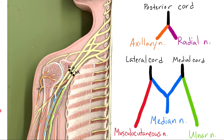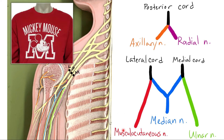As a mnemonic to help remember this, because of the shape of the M, some people say this looks like the logo for Mickey Mouse University — Mickey for musculocutaneous, Mouse for median, University for ulnar — so Mickey Mouse University in that order. That's where the M comes from.